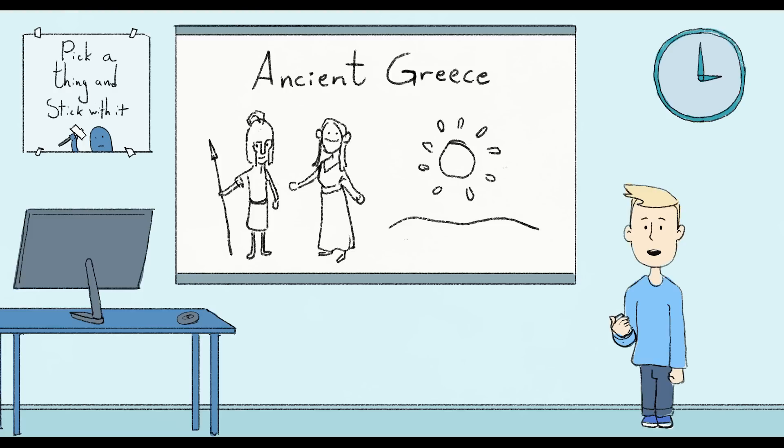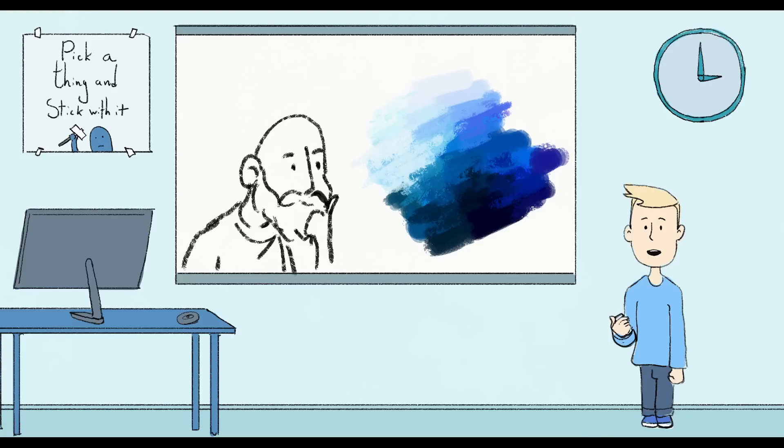In the times of the ancient Greeks, the color blue did not exist. People could see the color blue with their eyes, but mentally, people did not perceive blue.